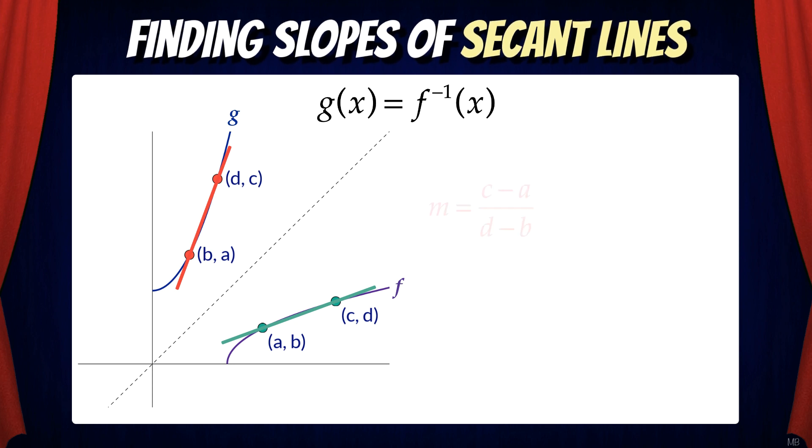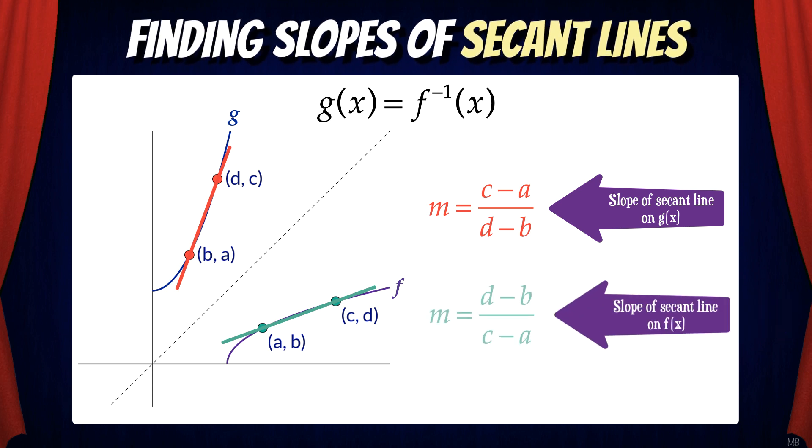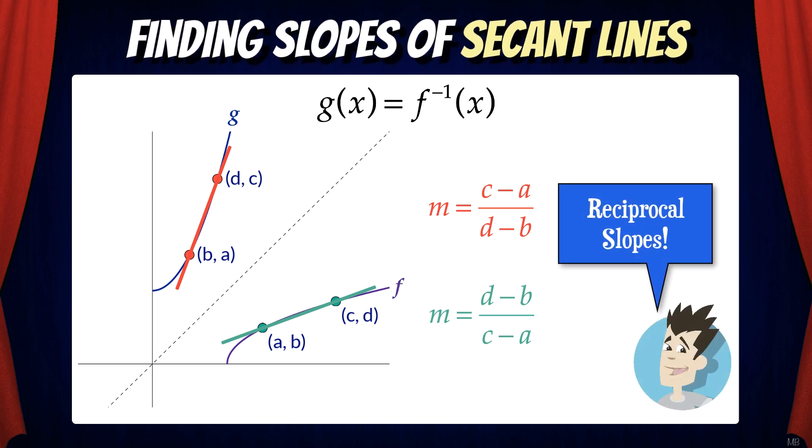The slope of the secant line on the g graph is c minus a over d minus b. The slope of the secant line on the f graph is d minus b over c minus a. Note that these are reciprocal slopes.